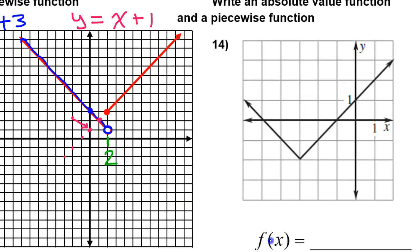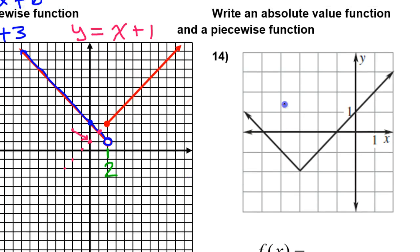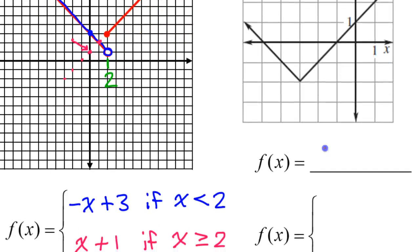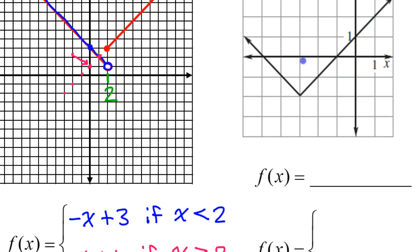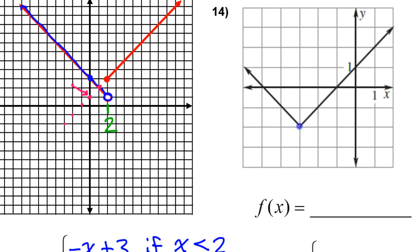Now let's take a look at problem number 14, which is special. It is a piecewise function, but more specifically this is the graph of an absolute value function — you can tell by the way it makes a V shape. You're being asked for the absolute value equation of this function. Notice that the vertex here is the point negative three comma negative two, whereas the parent function has a vertex at the origin, zero comma zero. This graph is left three and down two.